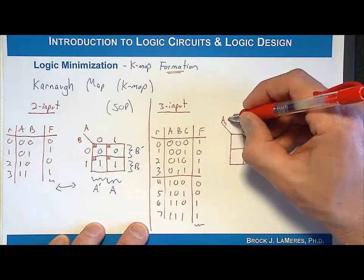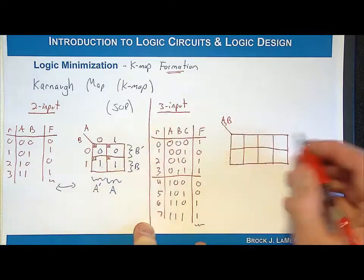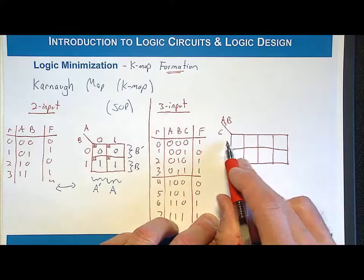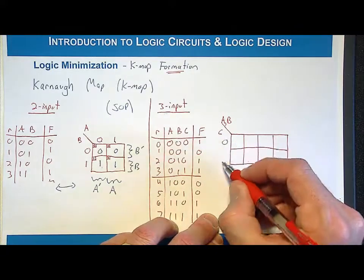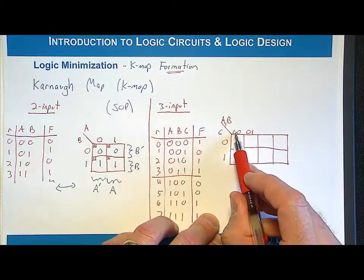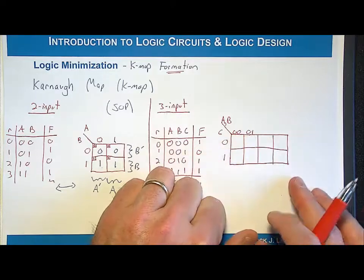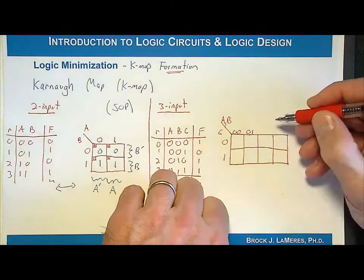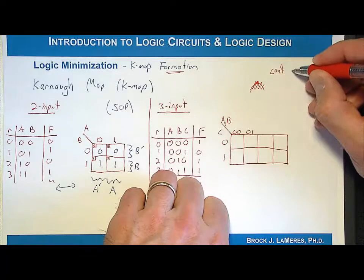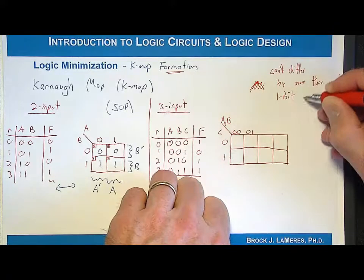Just like the two-input case, I list all possible input codes for each cell. For C on the side I have 0 and 1. Across the top for A,B I start with 00, then 01. Now there's one more important rule: two adjacent or neighboring cells cannot differ by more than one bit on the input.